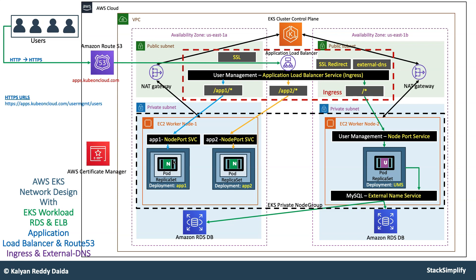With the Ingress service, you'll implement context path-based routing using three applications: slash app1 goes to app1, app2 goes to app2, and anything else goes to the user management microservice. In addition, you will implement SSL, enable HTTPS for your application, implement HTTP to HTTPS redirection using SSL redirect, and finally implement external DNS in the ALB Ingress Load Balancer — which automatically registers your domain name in the Route 53 service from your Kubernetes manifest.